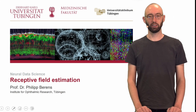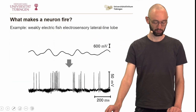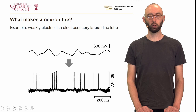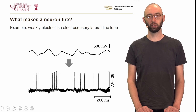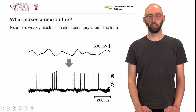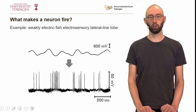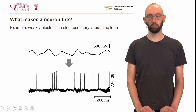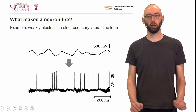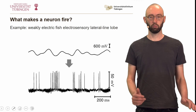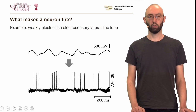Today we will talk about receptive field estimation. Welcome to this lecture in our lecture series Neural Data Science. What makes a neuron fire? In the last lectures we discussed the concept of tuning curves, where we had a simple parametric stimulus that we modulated, and then this changed the firing rate of the neuron. Tuning curves are a concept used if the stimulus is one or at most two-dimensional. One can view receptive field estimation as a generalization of that question: what in the stimulus or in the behavior of an animal makes a certain neuron fire?